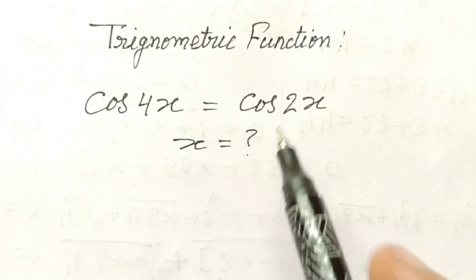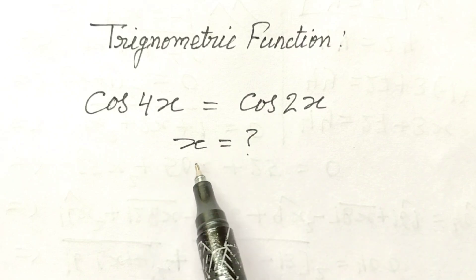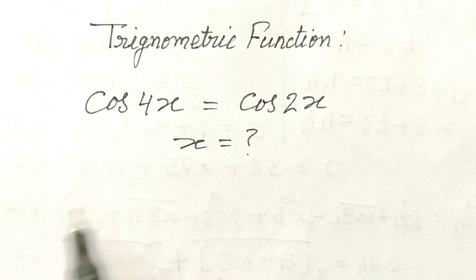Cos 4x is equal to cos 2x. So, we have to find out value of x. Let's start.